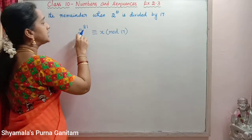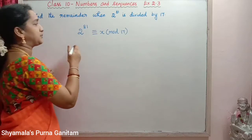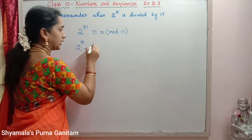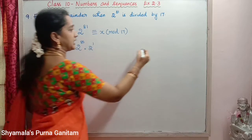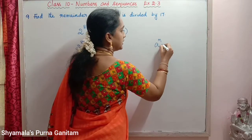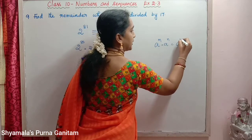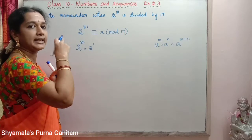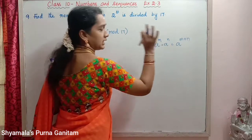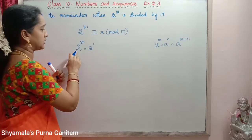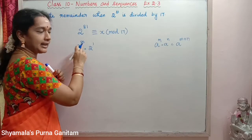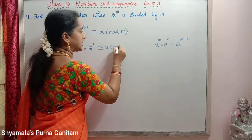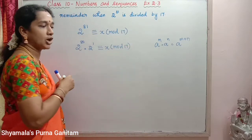The next step is to split 2 power 81 and write it as 2 power 80 into 2 power 1, because 80 + 1 = 81. Using the law a power m × a power n = a power (m + n), we rewrite this as 2 power 80 × 2 power 1 ≡ x (mod 17).